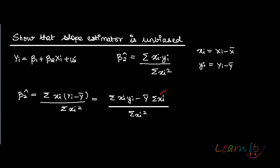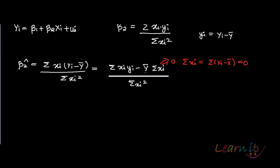Note that the term with Ȳ would be equal to zero because of the property that summation of deviations from mean equals zero — summation of xᵢ, which equals summation of (Xᵢ − X̄), is equal to zero. So what is left is summation of xᵢ into capital Yᵢ upon summation of xᵢ squared.